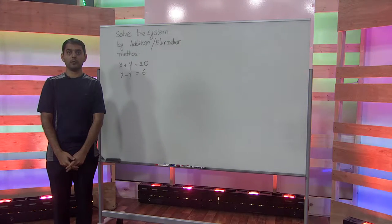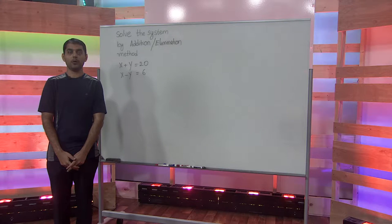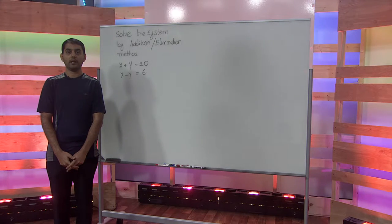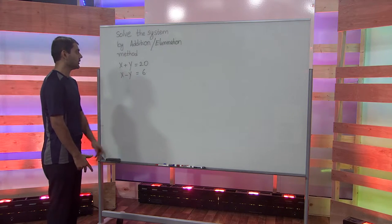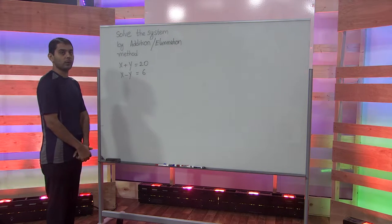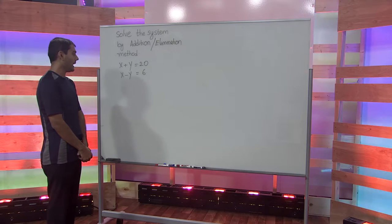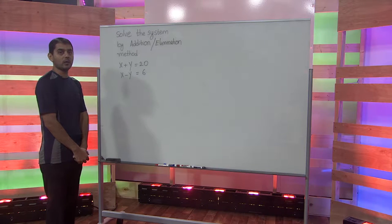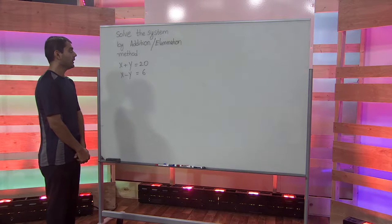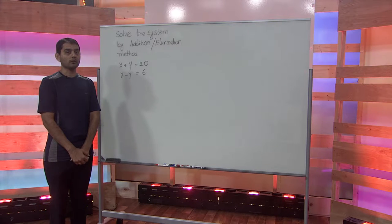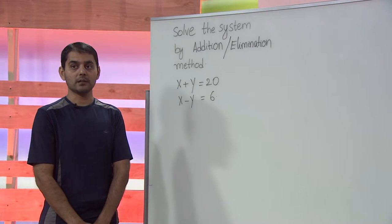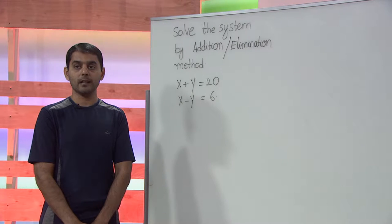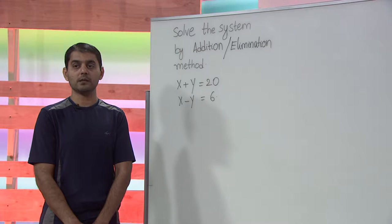In this lecture we will solve the system of linear equations by addition or the elimination method. The system given to us is x plus y equals 20 and x minus y equals 6. Addition method is also called the elimination method. As the name itself suggests, we want to find the values of x and y by eliminating one of the variables first.